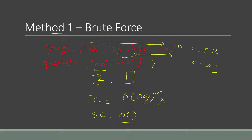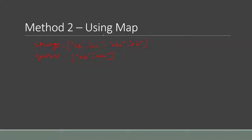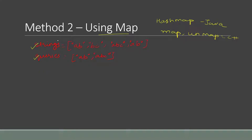Now let's see method number two. In the second method we will be using a map. If you are using Java, then you can use HashMap. If you are using C++, then use map or unordered_map. The first step is to traverse the full strings array and store the count of each unique string into the hash map.